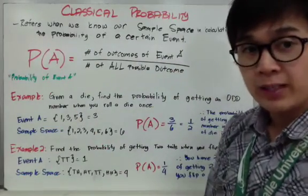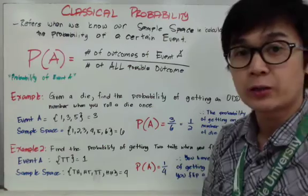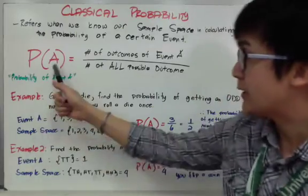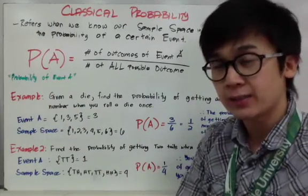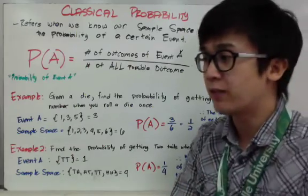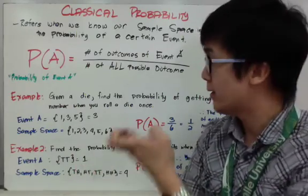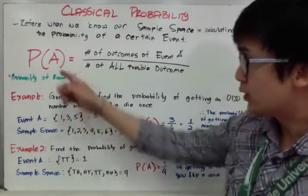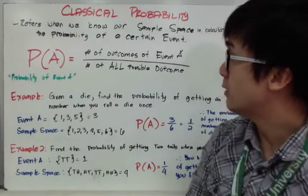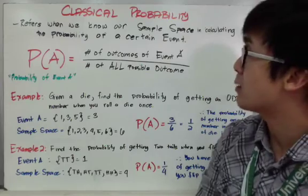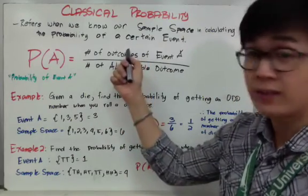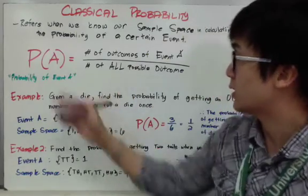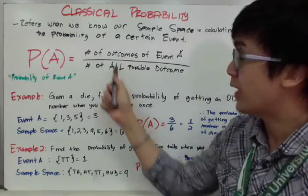Now let's answer some probability questions. The probability notation you need to be familiar with is P(A), where A is the name of your event. Classical probability refers to when we know our sample space for calculating the probability of a certain event: the number of outcomes in event A divided by the total number of outcomes in the sample space. That is your classical probability formula.